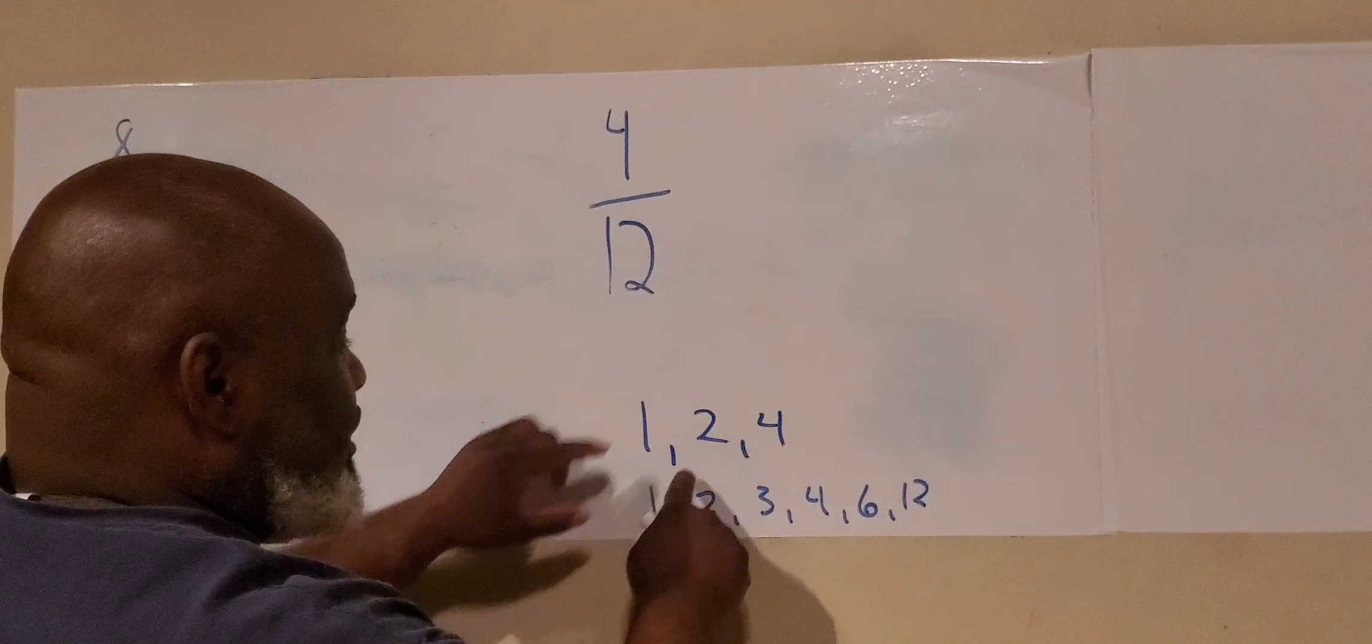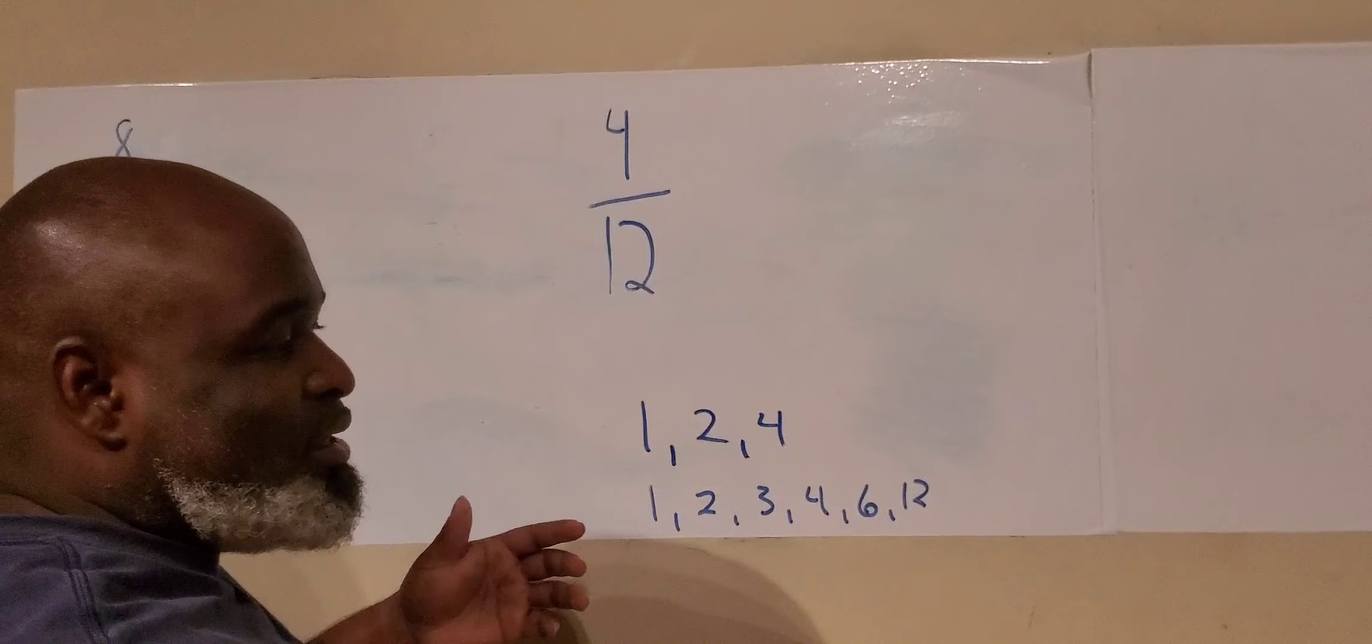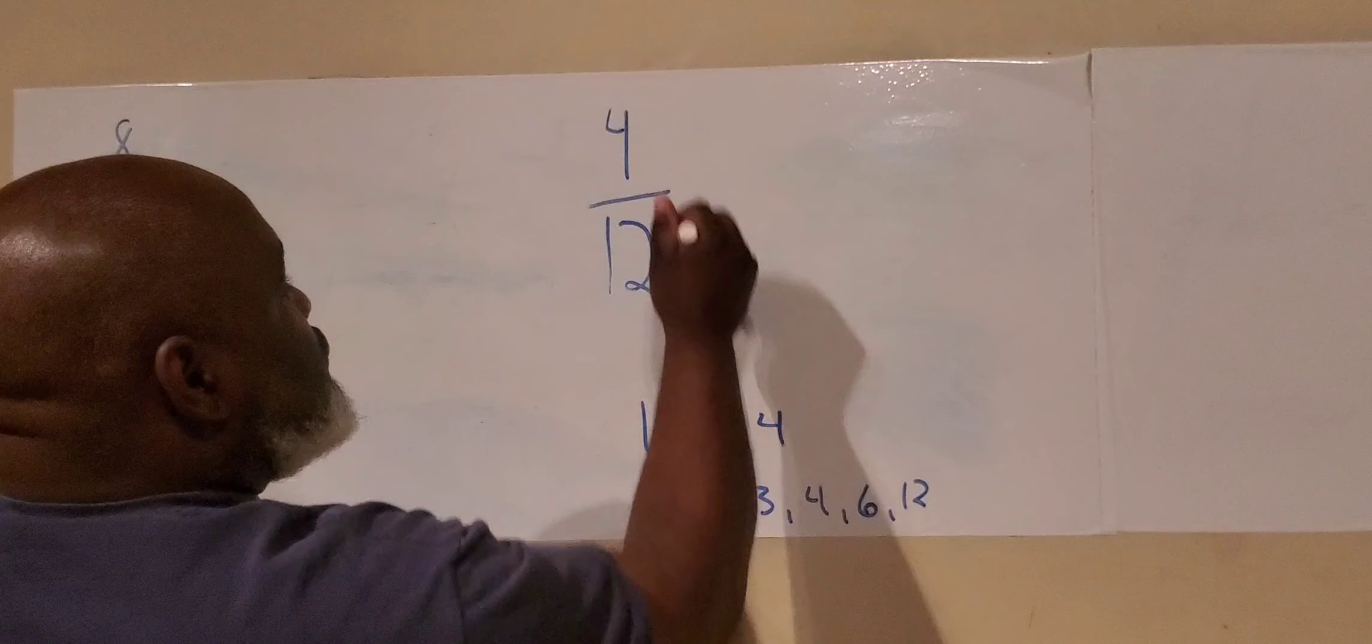Step two, we need to find like terms between the numerator and the denominator. We have four and four. We could use one and one and two and two, but we'll just end up having to simplify in double steps. So let's just use four and four.